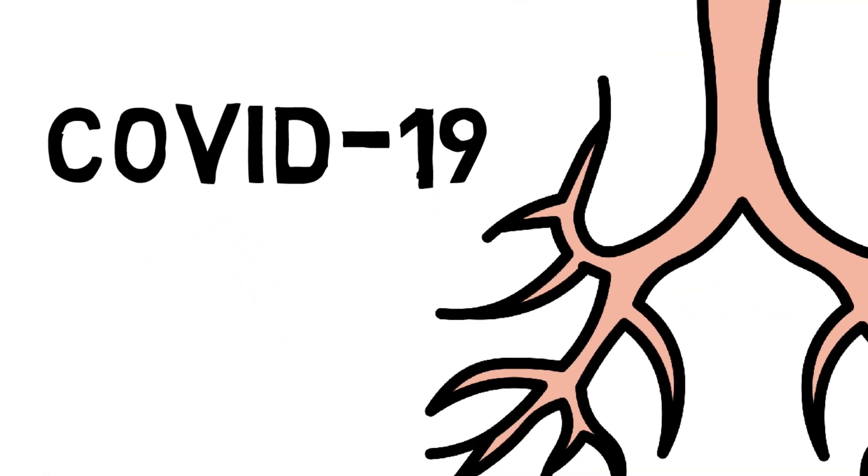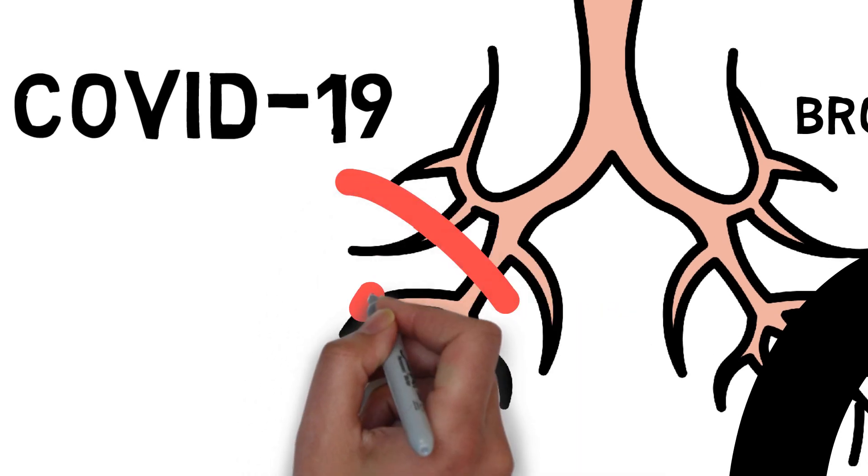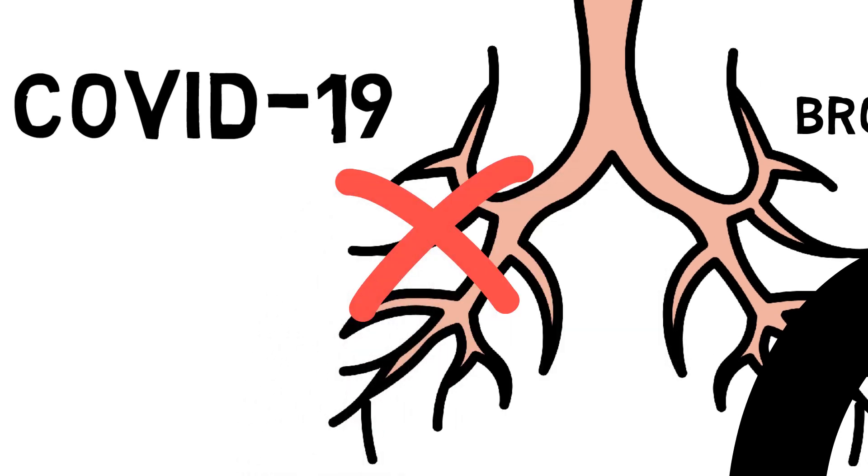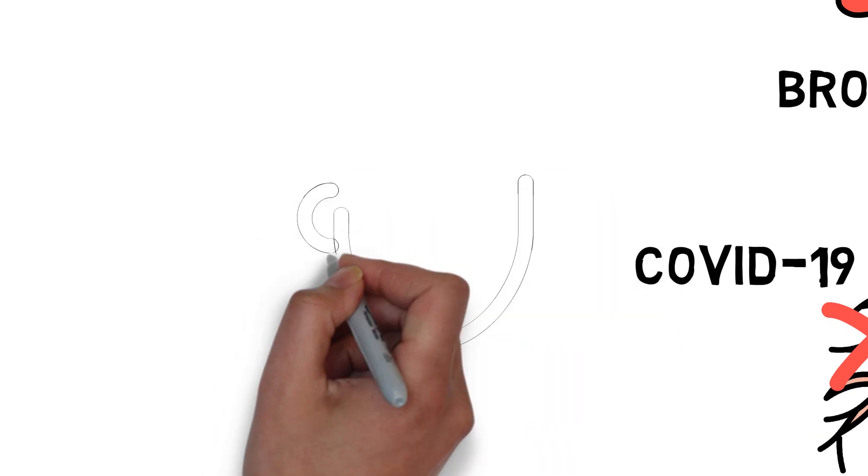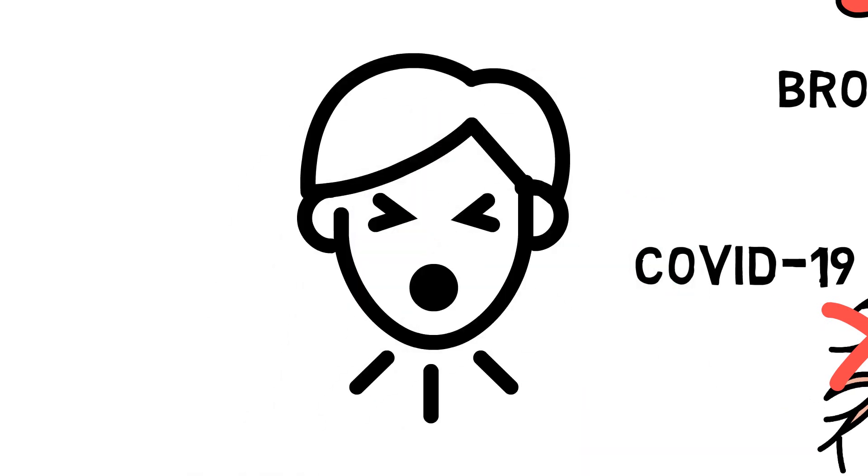Professor Bogart goes on to say that when we contract COVID-19, the lining of the respiratory tree typically becomes damaged, irritating the nerves in the lining of the airway and causing that dry cough we've heard about.